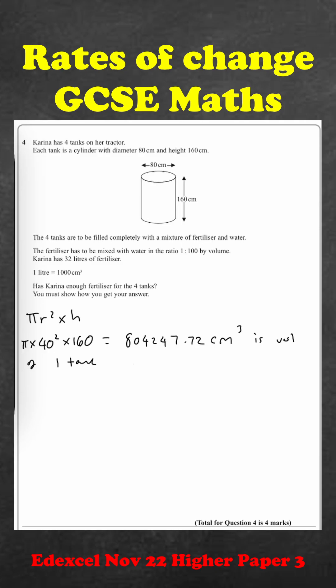We are told we need the ratio 1 to 100 for fertilizer to water which basically means 1 out of 101 is fertilizer and 100 out of 101 is water. So fertilizer needed is going to be this number divided by 101 which we get as 7962.85.